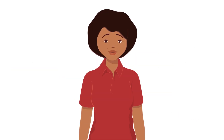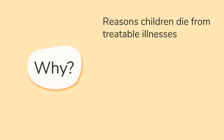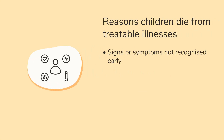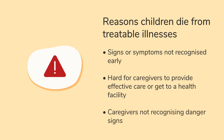Although these illnesses are often treatable, many children still die from them. There are various reasons for this. Signs or symptoms of illness may not be recognized early, leading to a delay in appropriate treatment. It may be hard for caregivers to provide effective care or get their child to a health facility due to distance, cost, or crowding at the health facility. Or caregivers may not know how to recognize the danger signs that an illness has become more serious.